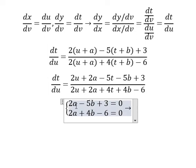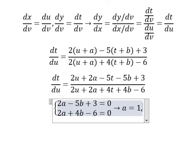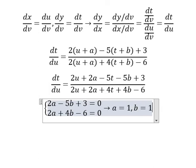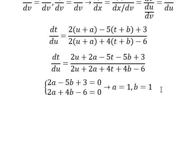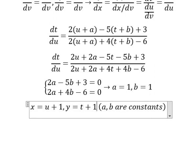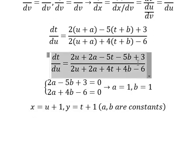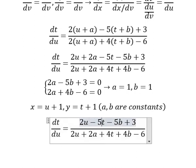Now we need to find the solutions of a and b. So a equals number 1 and b equals number 1. Now I will put a and b back. If we put a equal to 1 and b equal to 1, we just have the equation like this.